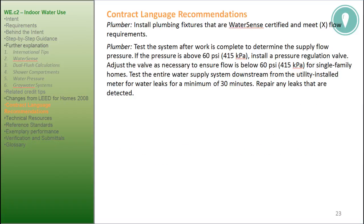Contract Language Recommendations. Plumber: install plumbing fixtures that are WaterSense certified and meet the specified flow requirements. Plumber: test the system after work is complete to determine the supply flow pressure. If the pressure is above 60 psi or 415 kilopascals, install a pressure regulation valve. Adjust the valve as necessary to ensure flow is below 60 psi or 415 kilopascals for single-family homes. Test the entire water supply system downstream from the utility-installed meter for water leaks for a minimum of 30 minutes. Repair any leaks that are detected.